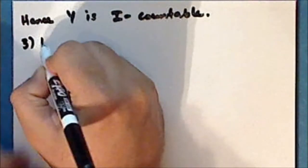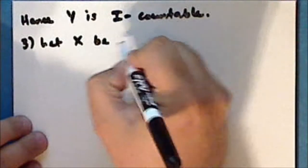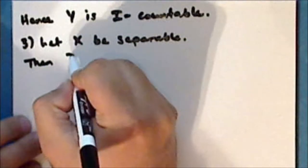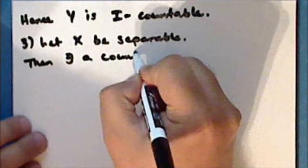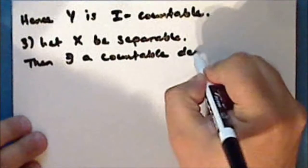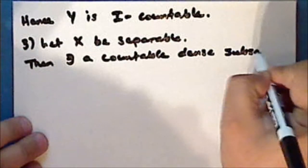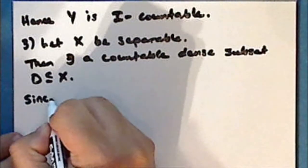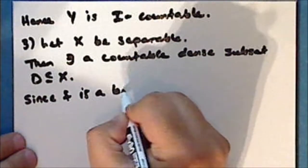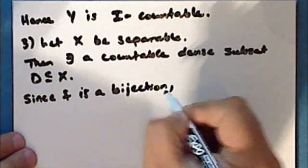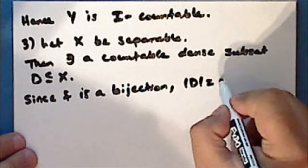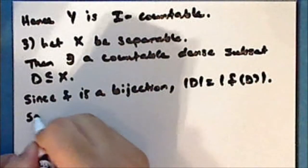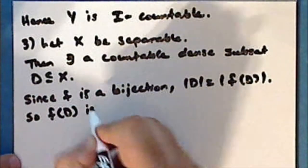Let the space X be separable. Then there exists a countable, dense subset D of the space X. Since the function F is a bijection, the cardinality of the set D is equal to the cardinality of the direct image of the set D. And so F of D is countable.